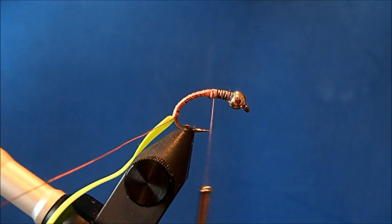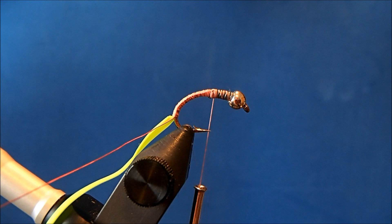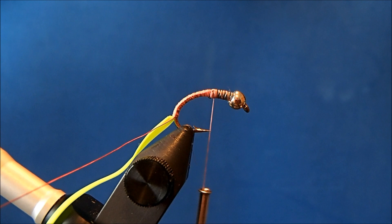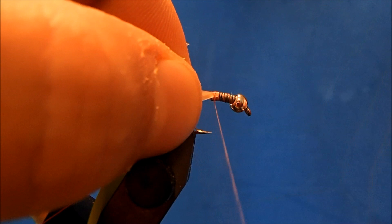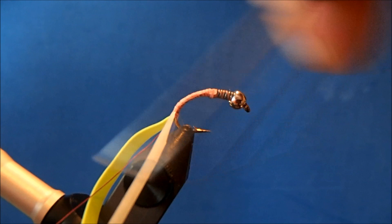And finally, the body is going to be made up of that Nymph Skin but this is in a translucent. So I'm going to take maybe a 3 or 4 inch section and when I trim it, instead of a V, I'll trim it at an angle to tie in. So I'll again catch the tip of that and stretch it down.